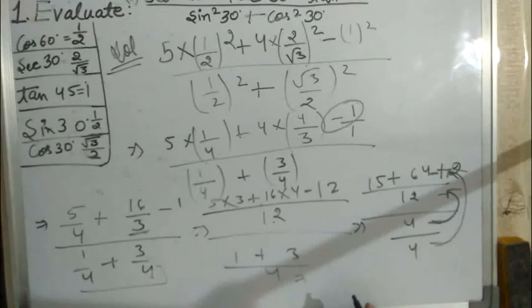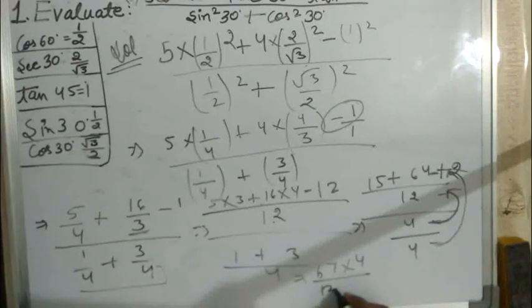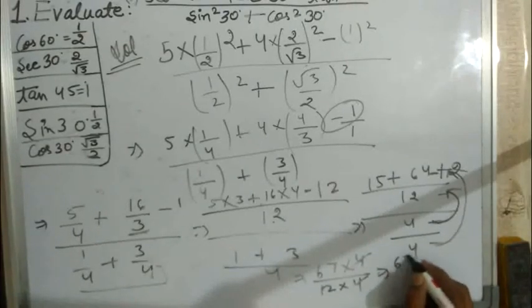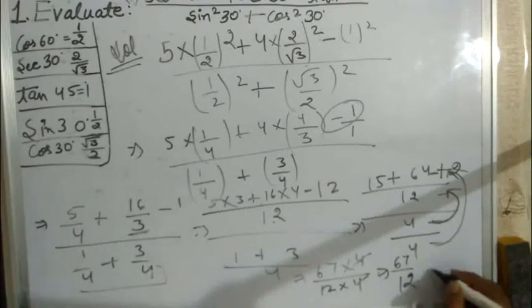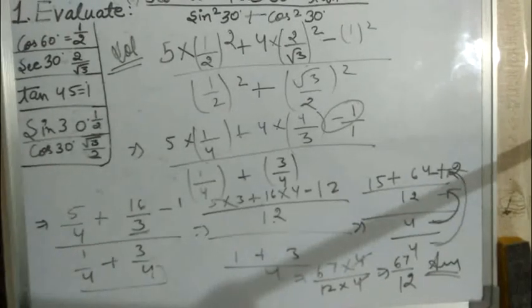167 for 12, into 4, 4 cancels, then we will get 167/12.